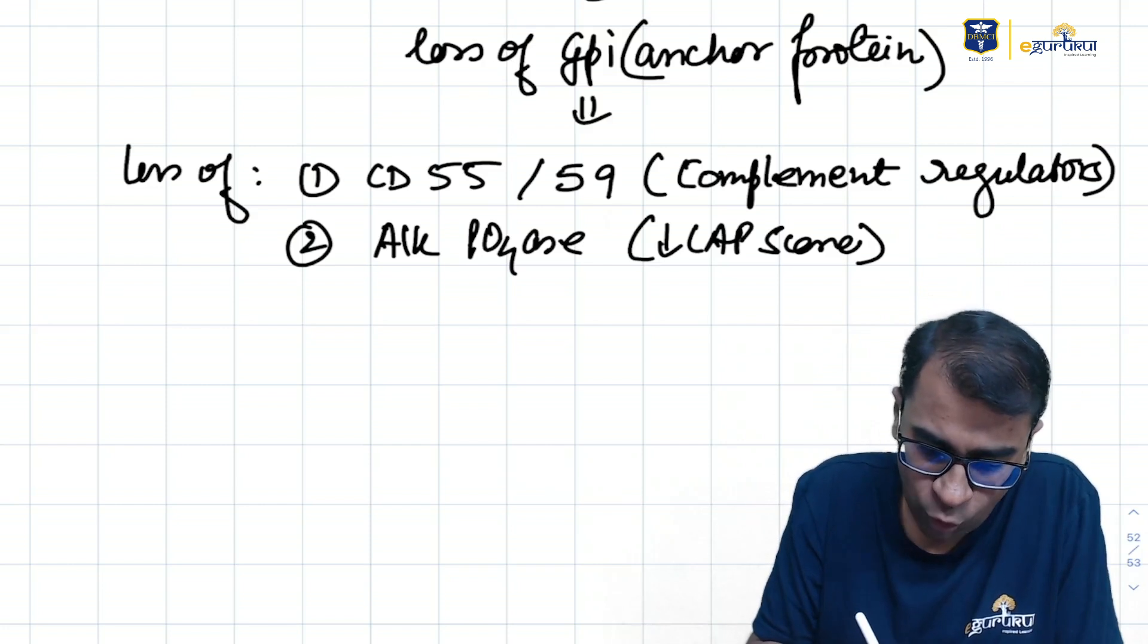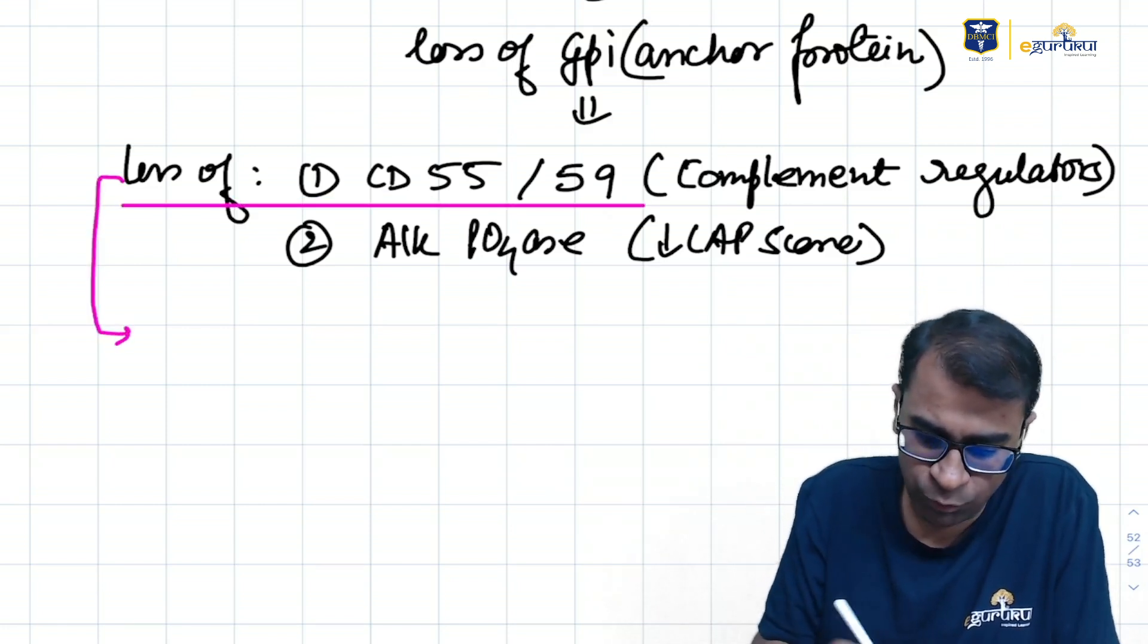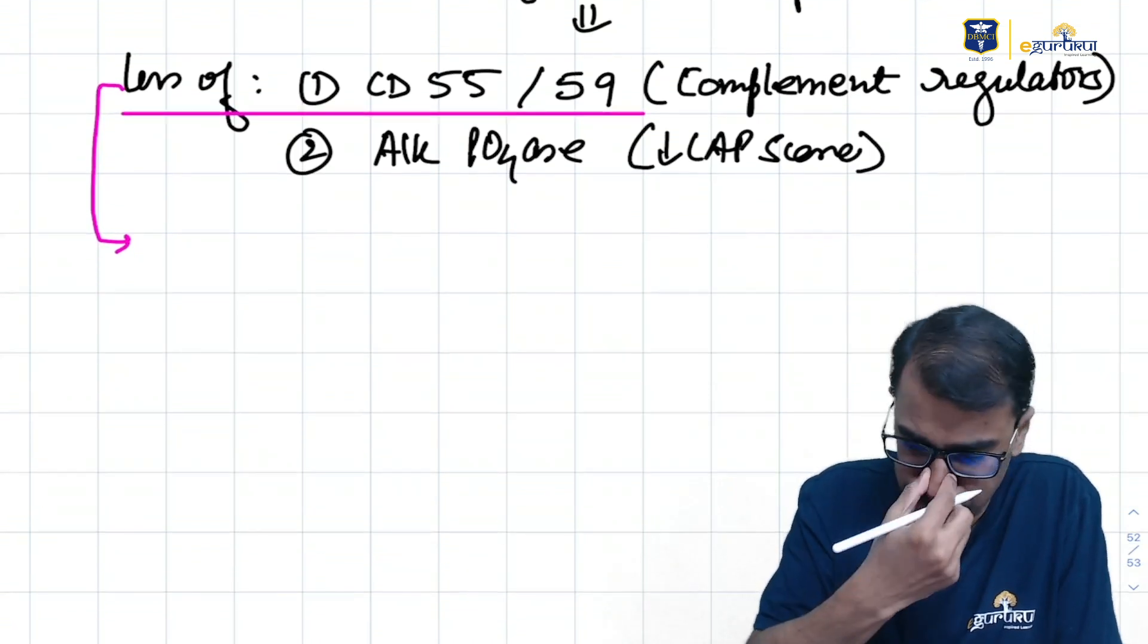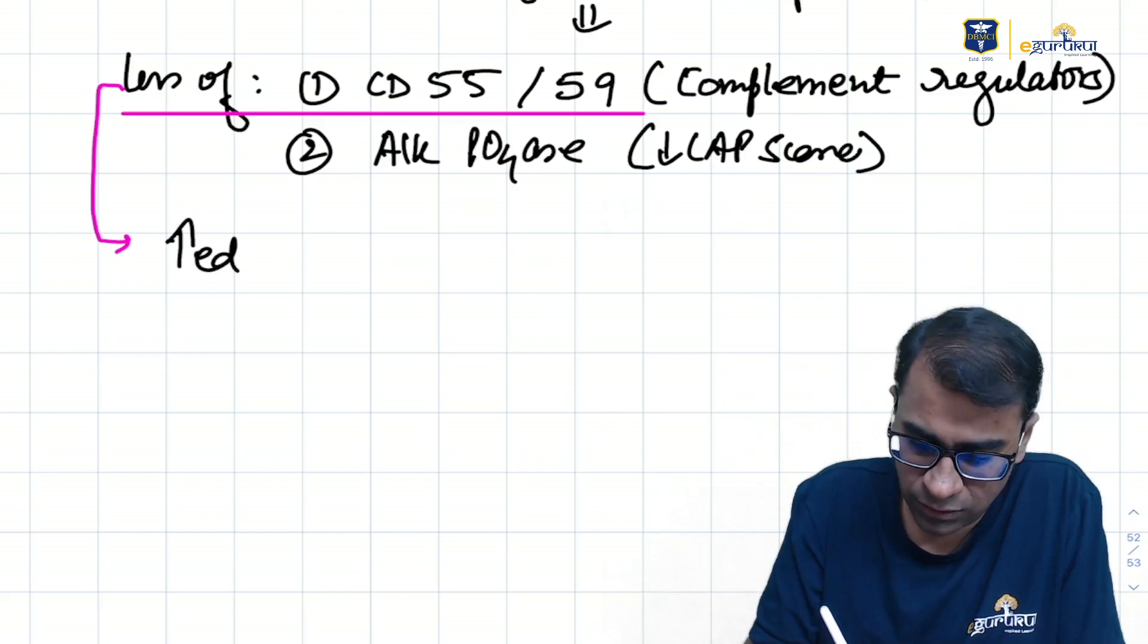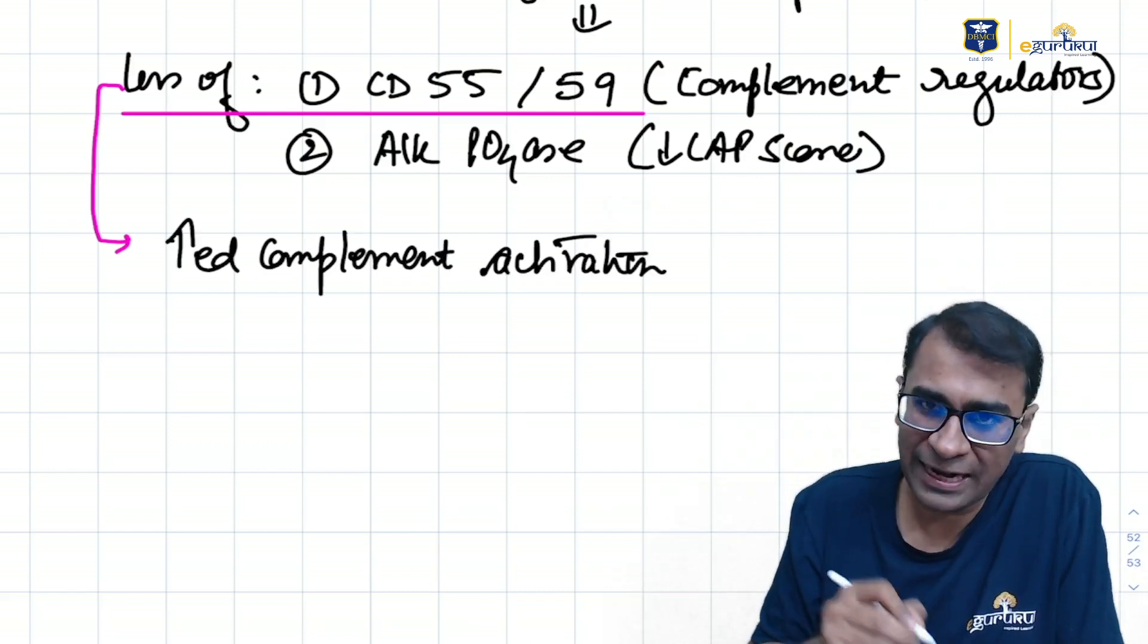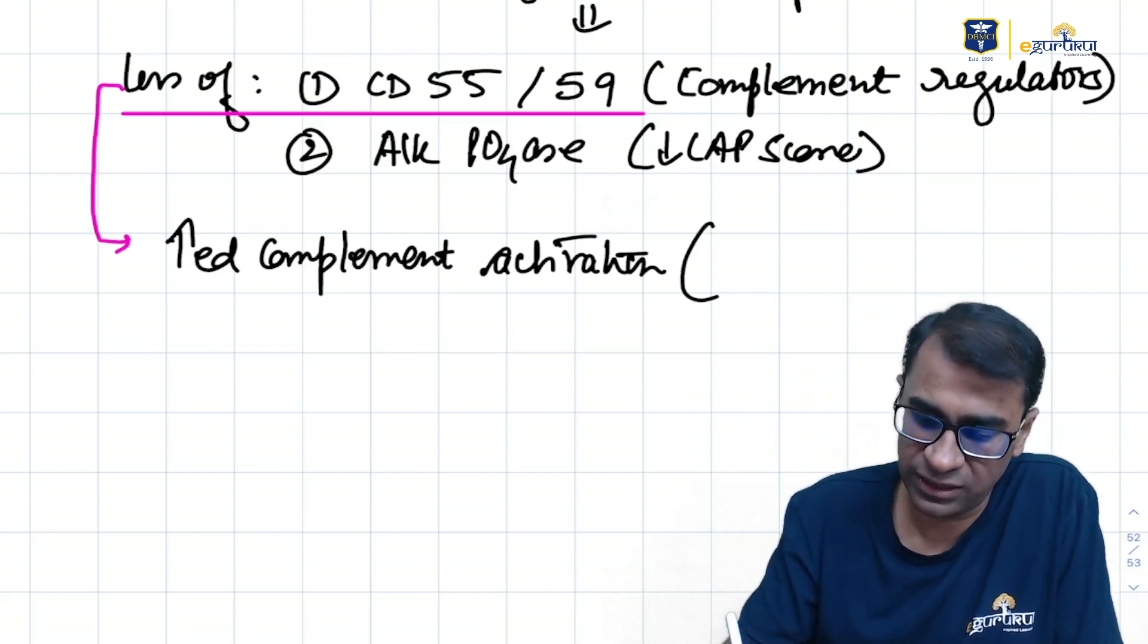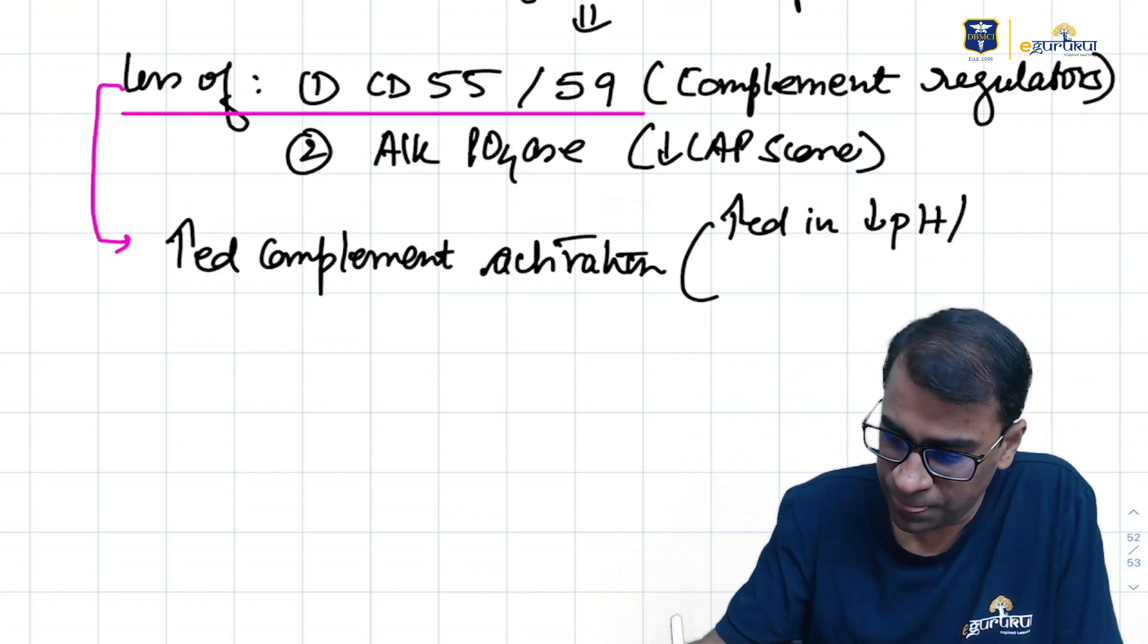Because of loss of CD55 and 59, both these losses cause increased complement activation. And remember, complement activation is more increased especially in decreased pH and infections.